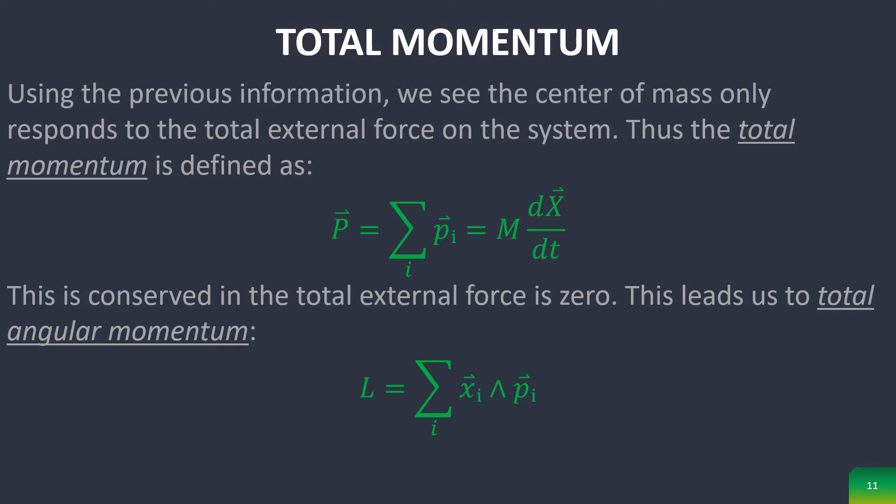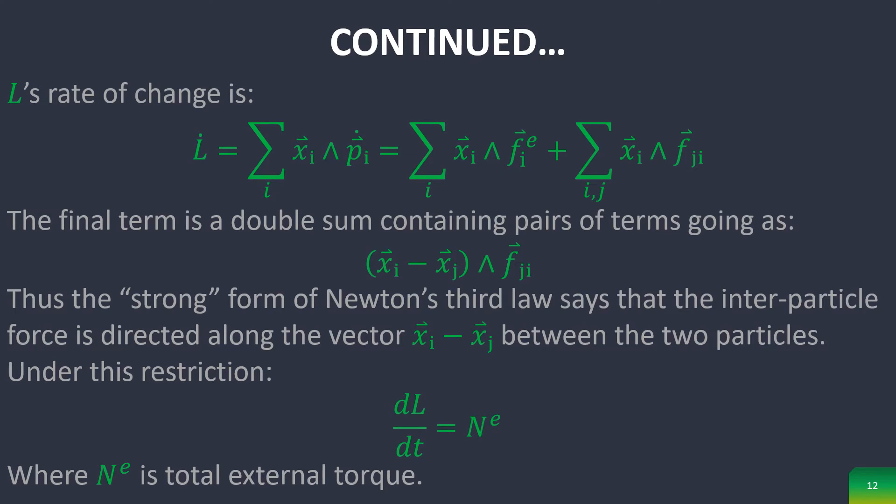Using this, we can come to the definition of total momentum, and this also leads us to total angular momentum. We can then use the rate of change of angular momentum to come up with torque right here, which basically says that the inter-particle force is directed along this vector between the Ith particle's position and the Jth particle's position, where this restriction means that the time derivative of angular momentum is just equal to the external torque.